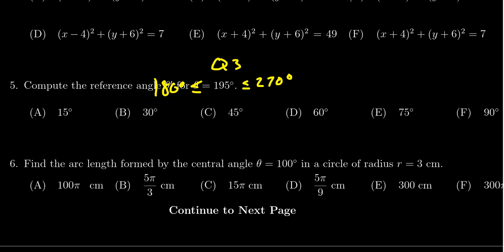So to find the reference angle, we need to subtract 180 from it so we get something between 0 and 90 degrees. So we're going to take 195 degrees, subtract from it 180 degrees, and that's going to give us 15 degrees. And so the reference angle of theta would be choice A, 15 degrees.